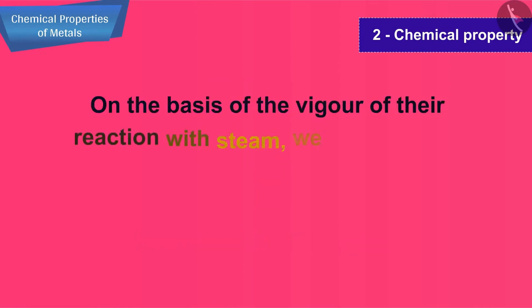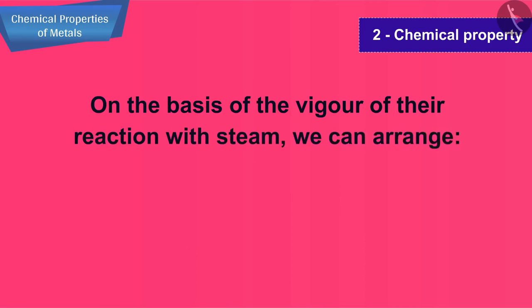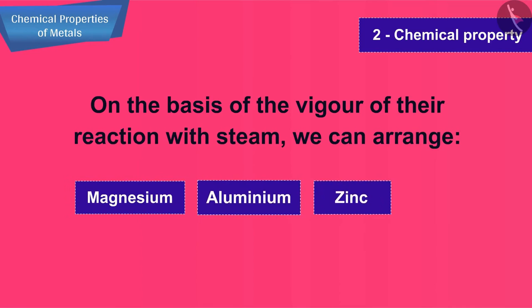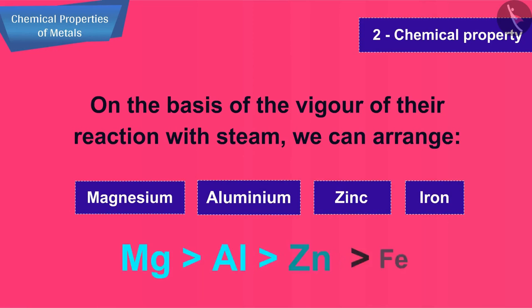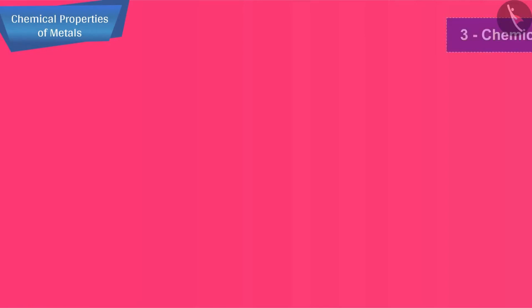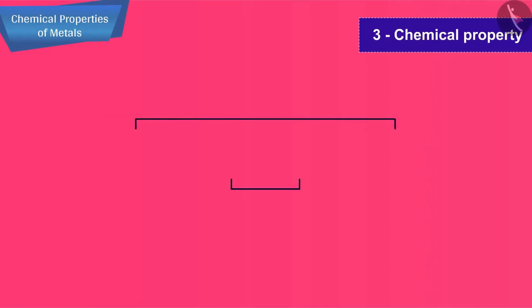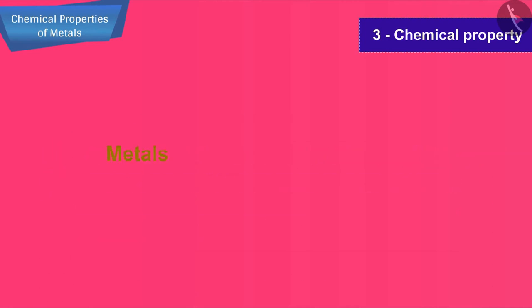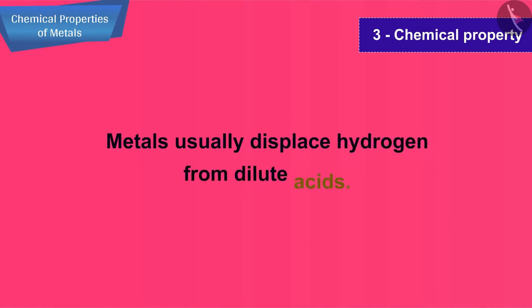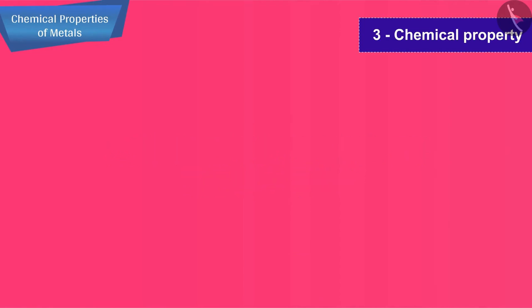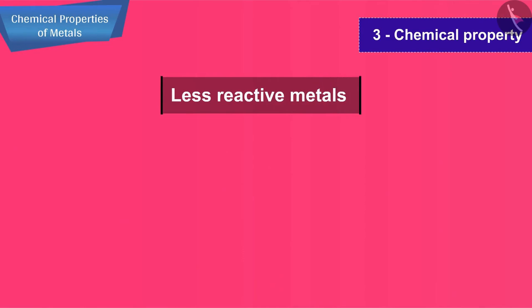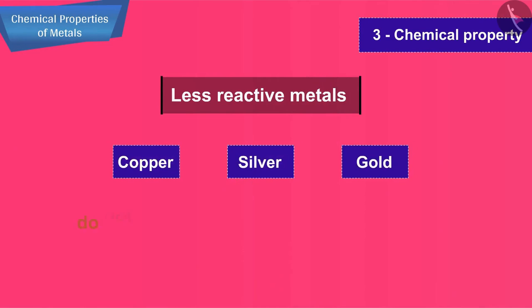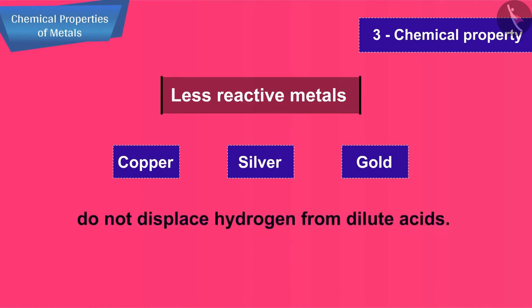On the basis of the vigor of their reaction with steam, we can arrange magnesium, aluminium, zinc, and iron metals in the decreasing order of their reactivity. The next property that we are about to study is the reaction of metals with dilute acids. Metals usually displace hydrogen from dilute acids. Only less reactive metals like copper, silver, and gold do not displace hydrogen from dilute acids.